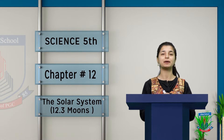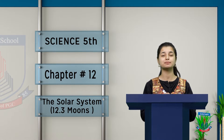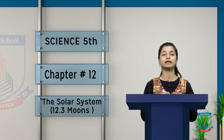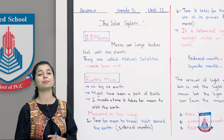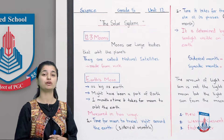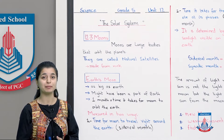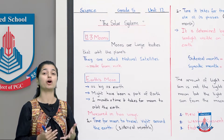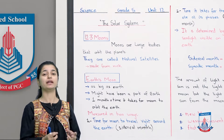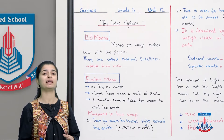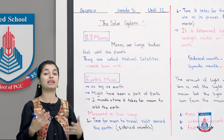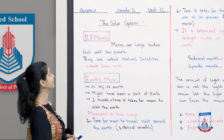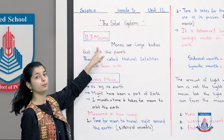Asalaamu Alaikum grade 5, I'm Sabah and I'm back with chapter number 12 which is about the solar systems. Aaj ka humara focus hoga learning about the moon, so let's get to the board. So far in chapter 12 we have padha hai sun ke baare mein, different planets ke baare mein, even dwarf planets ke baare mein. Aaj hum ja rahe hai ek step further — 12.3 Moons.